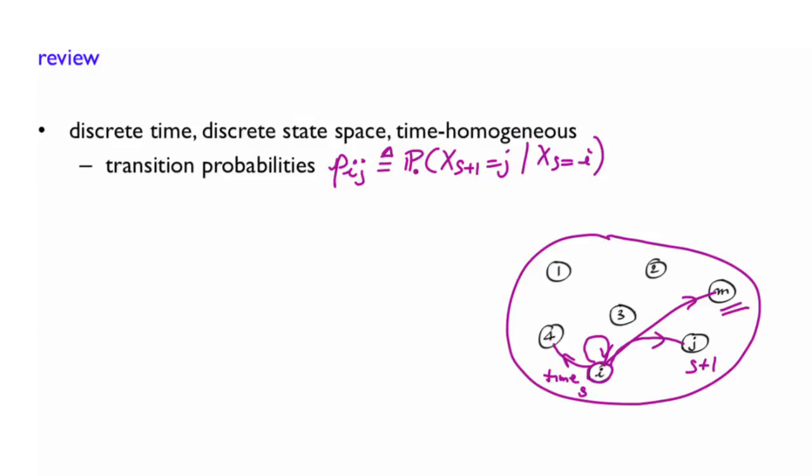Notice that these transition probabilities pij are not functions of s. So irrespective of what the time s that we are talking about, these transition probabilities are the same. So this is what we mean by a time homogeneous Markov chain. In other words, these are valid for s equals 0, 1, 2, and so and so forth.